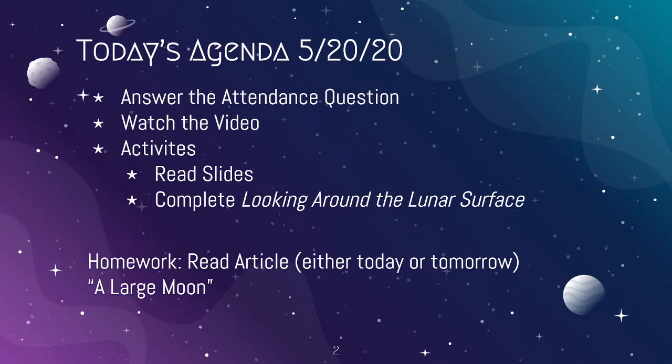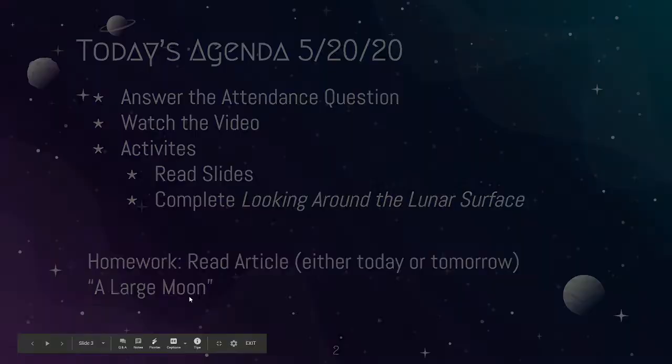At this point we know the planet has to be in a habitable zone around a main sequence star that came from a supernova. Now we're going to look at what else in the neighborhood needs to be right — like having a big Jupiter to protect us from asteroids, and having a large moon, which is also very beneficial for life on Earth.